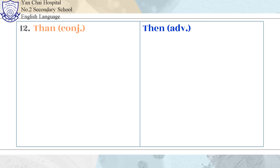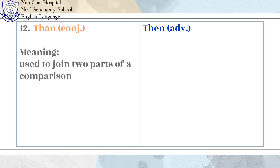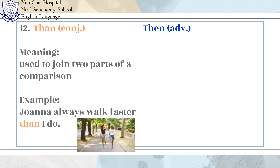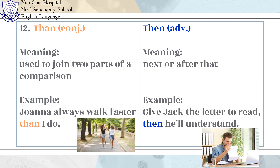Number 12: Than and Then. Than is used to join two parts of a comparison. Example: Joanna always walks faster than I do. Then means next or after that. Example: Give Jack the letter to read, then he will understand.